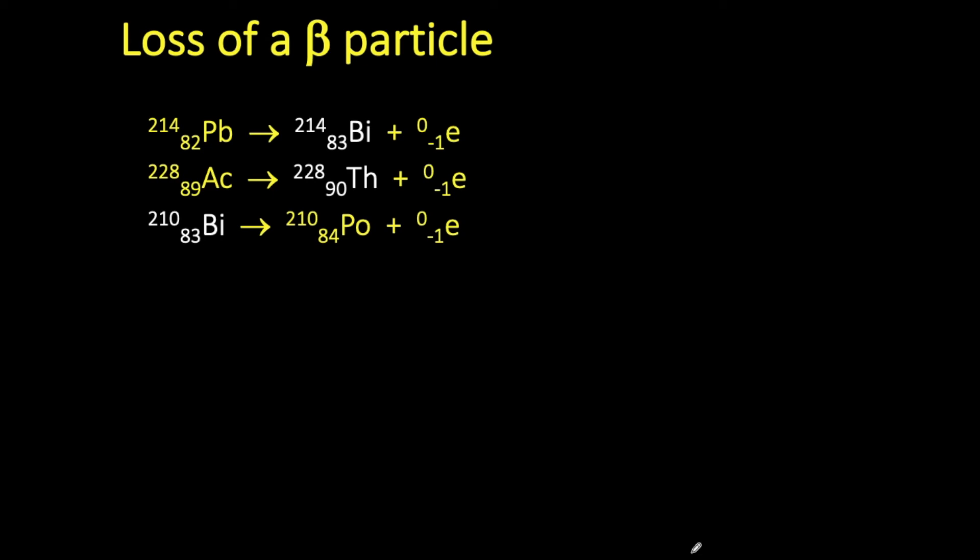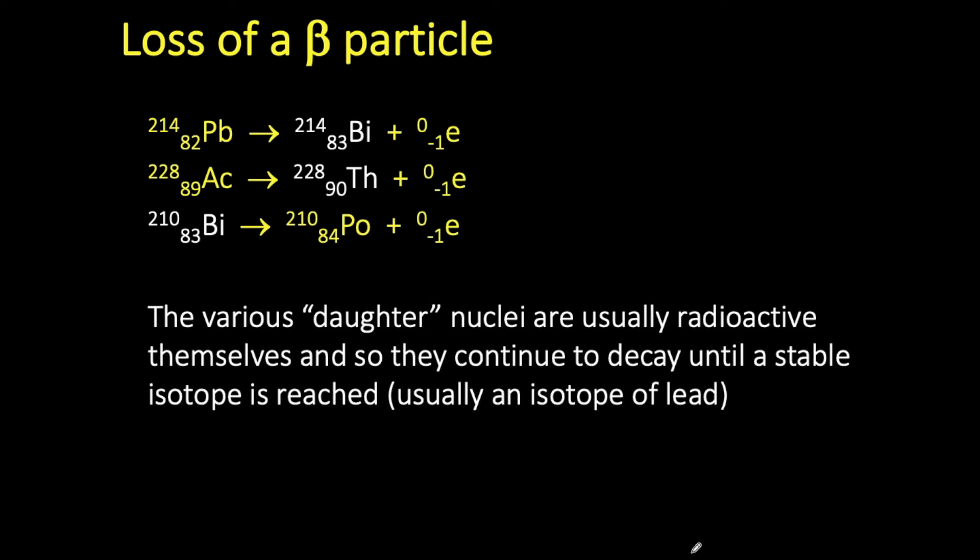And just to kind of tie this stuff up, I just wanted to say that the daughter nuclei, so the new nuclei produced during radioactive decay, they themselves tend to be radioactive as well. So what happens is that the decay continues until they reach a stable isotope and usually that stable isotope is lead. Radioactive decay is usually not just the loss of one single particle. It usually requires the emission of a number of particles in order to reach a stable isotope.